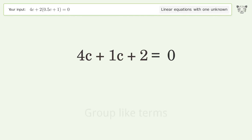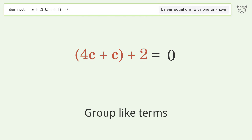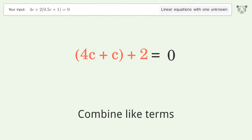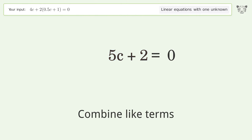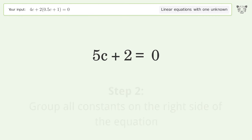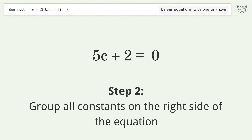Group like terms and combine like terms. Then group all constants on the right side of the equation.